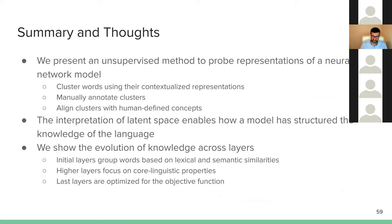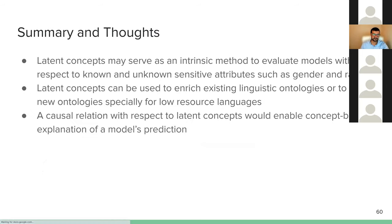To summarize: I presented an unsupervised method to probe representations of neural network models. We cluster contextualized representations, then manually annotate them, and also align these concepts with human-defined concepts. We have seen that interpreting the latent space helps us understand how the model has structured its knowledge of language. The knowledge evolved across layers from lexical and semantic similarities to more core linguistic properties, then towards what is important for the objective function.